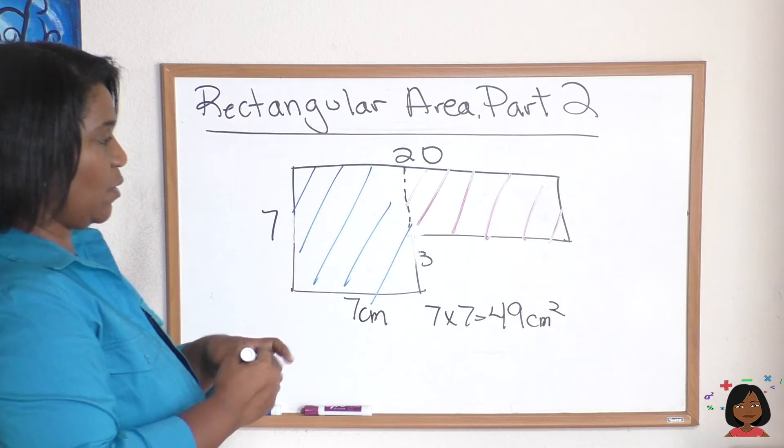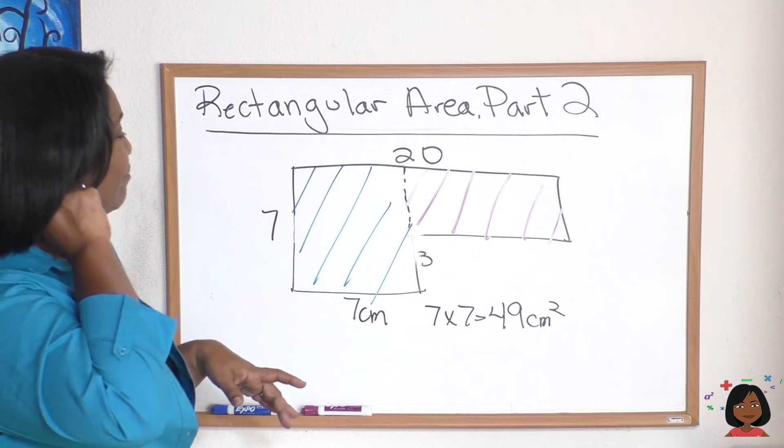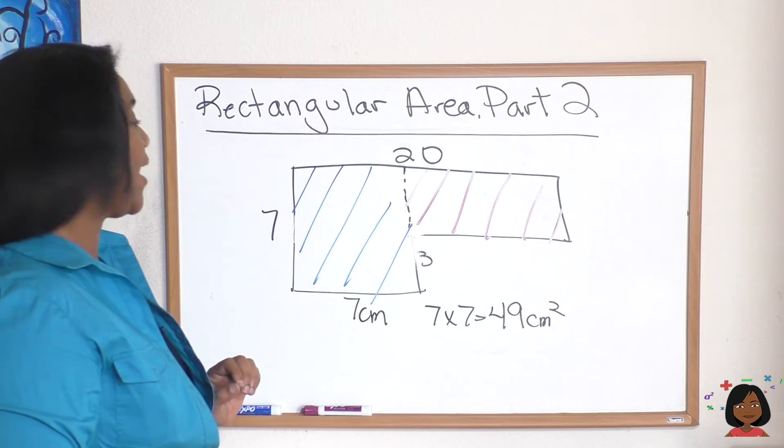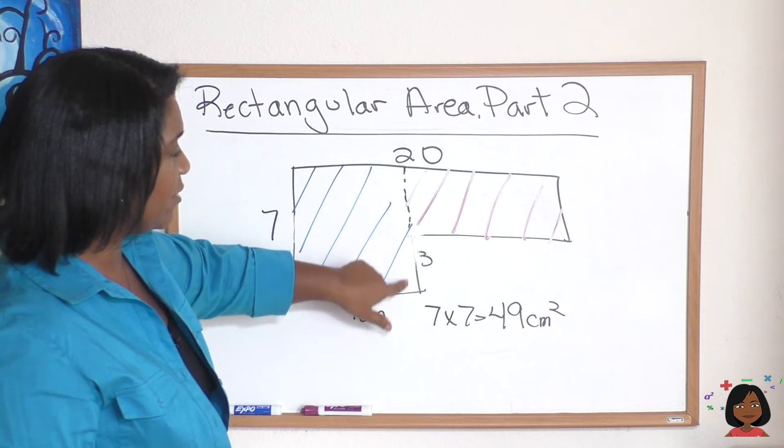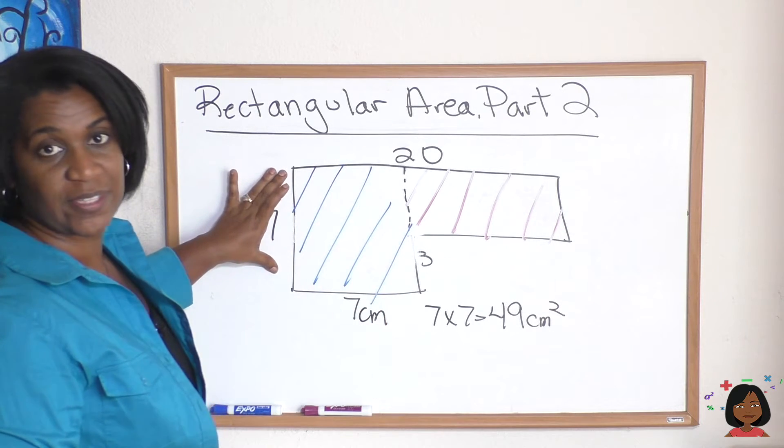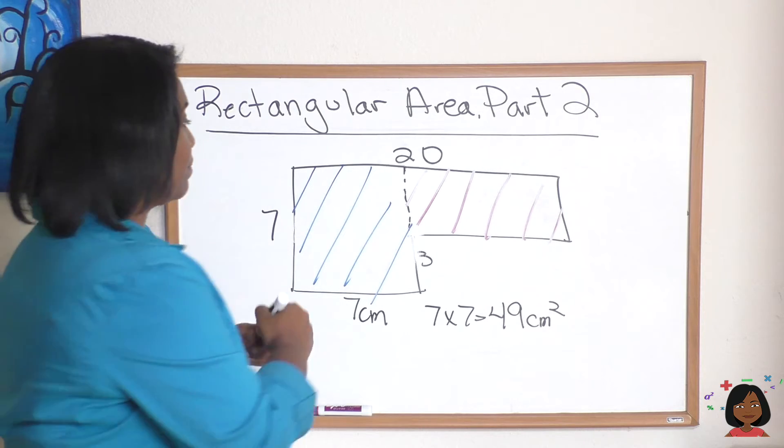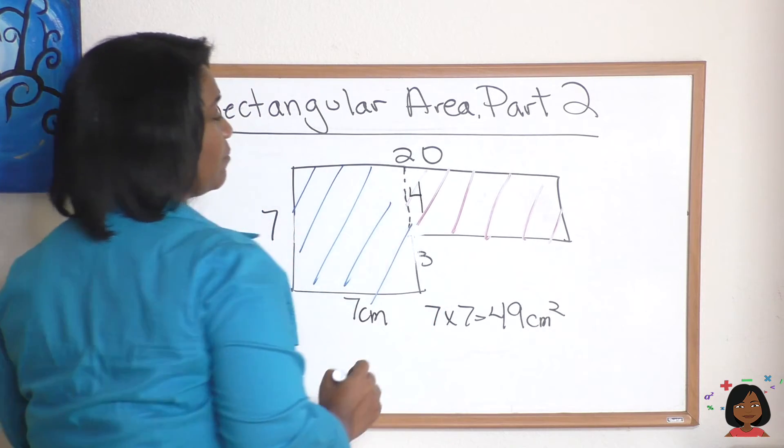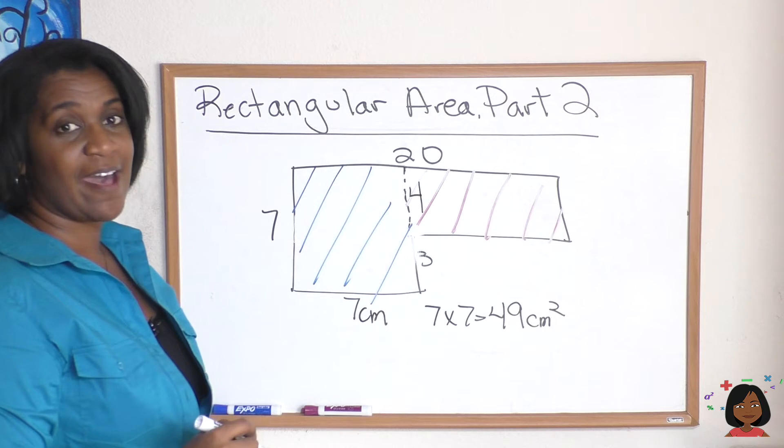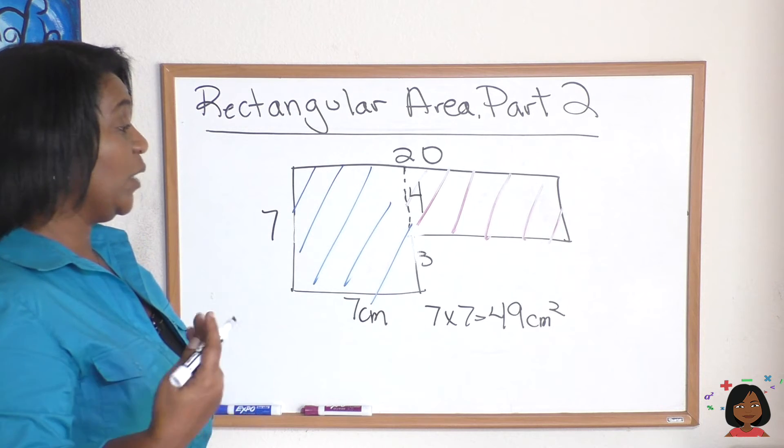Now what about this one? We're missing a whole bunch on this it seems. Well, calm down. It's not too bad. We know that this side here is three. And if the whole thing is seven, it means that this piece right here is a four. Let's write it in. Four. So now we have a width. We need a length.